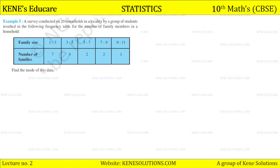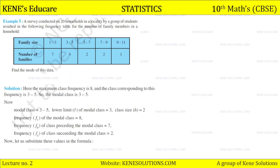Let us consider the following example. A survey conducted on 20 households in a locality by a group of students resulted in the following frequency table for the number of family members in a household: 1–3: 7, 3–5: 8, 5–7: 2, 7–9: 2, 9–11: 1. Find the mode of this data.